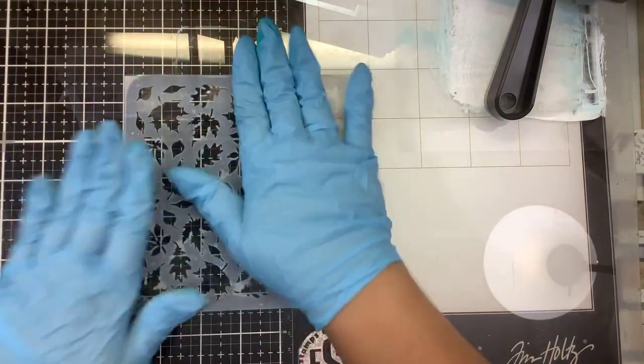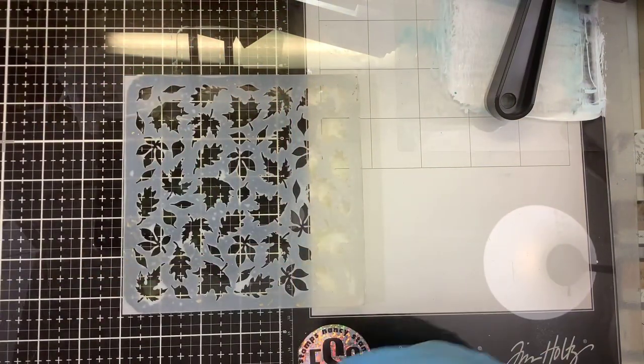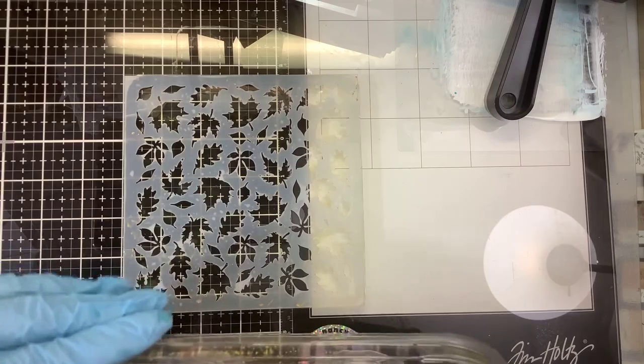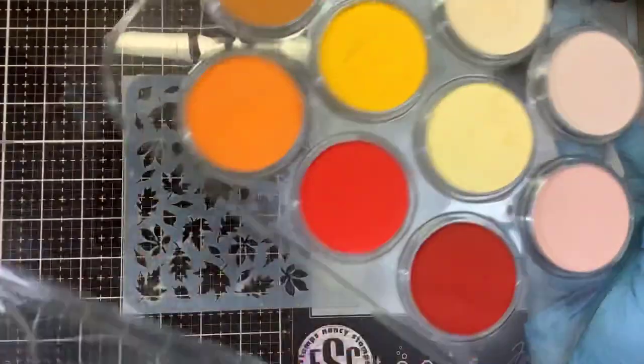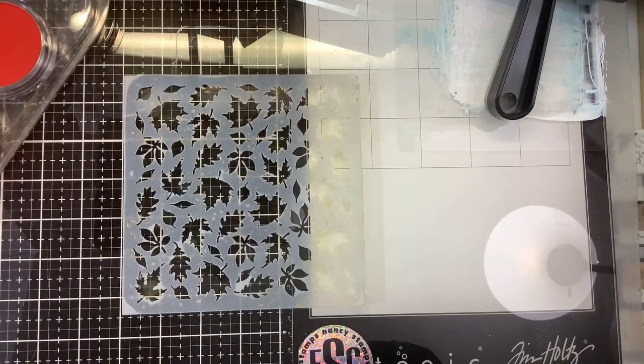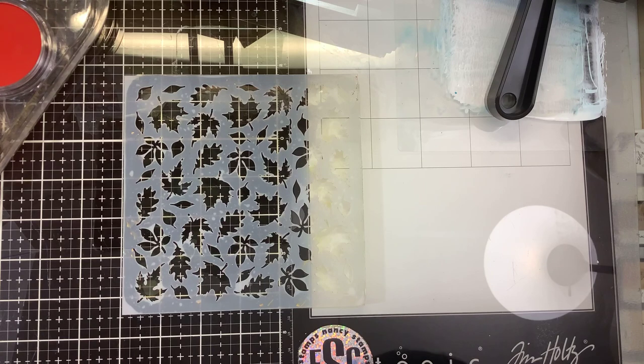And of course, you can just stencil right on paper, but I think it's a cool different look using the Pan Pastels. So here are the Pan Pastels. I'm going to be using these warm colors: red, oranges, yellows. Let me grab one of my soft tools here to kind of blend it in.